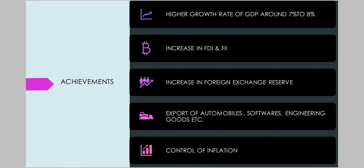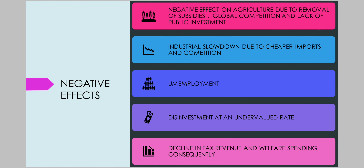However, there were certain negative effects such as removal of subsidies from agriculture, which gave a setback to the agricultural sector. No investment was done for the agricultural sector during this period. Industrial slowdown was there due to competition from cheap imports. Though GDP increased, there was an increase in unemployment as well. Disinvestment was done at an undervalued rate.